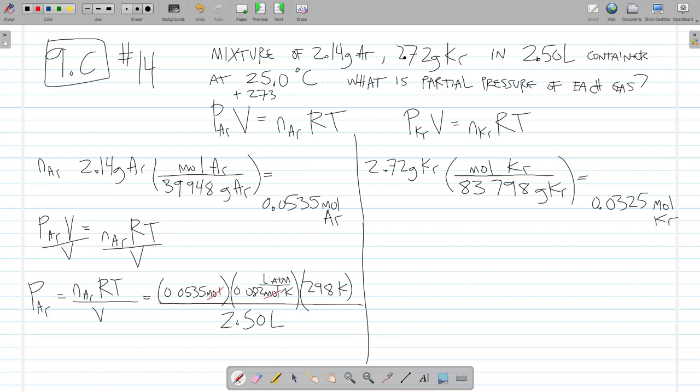Moles in the numerator cancels moles in the denominator. Kelvin in the denominator and Kelvin in the numerator. Liters in the numerator and liters in the denominator. So, I'm left with atmospheres. So, the pressure of argon equals 0.5229 atmospheres.